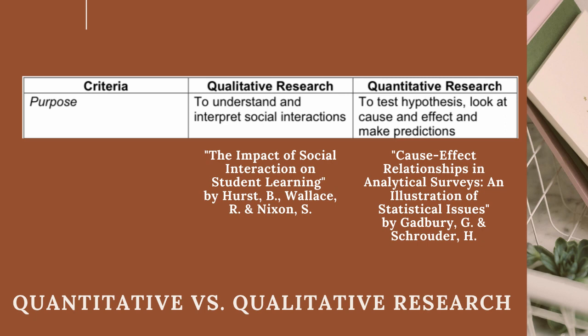The purpose of qualitative research is to understand and interpret social interactions. For example, the study entitled 'The Impact of Social Interaction on Student Learning.' The purpose of quantitative research is to test hypotheses, look for cause-and-effect relationships, and make predictions. For example, the study 'Cost-Effect Relationships in Analytical Surveys and Illustration of Statistical Issues.'